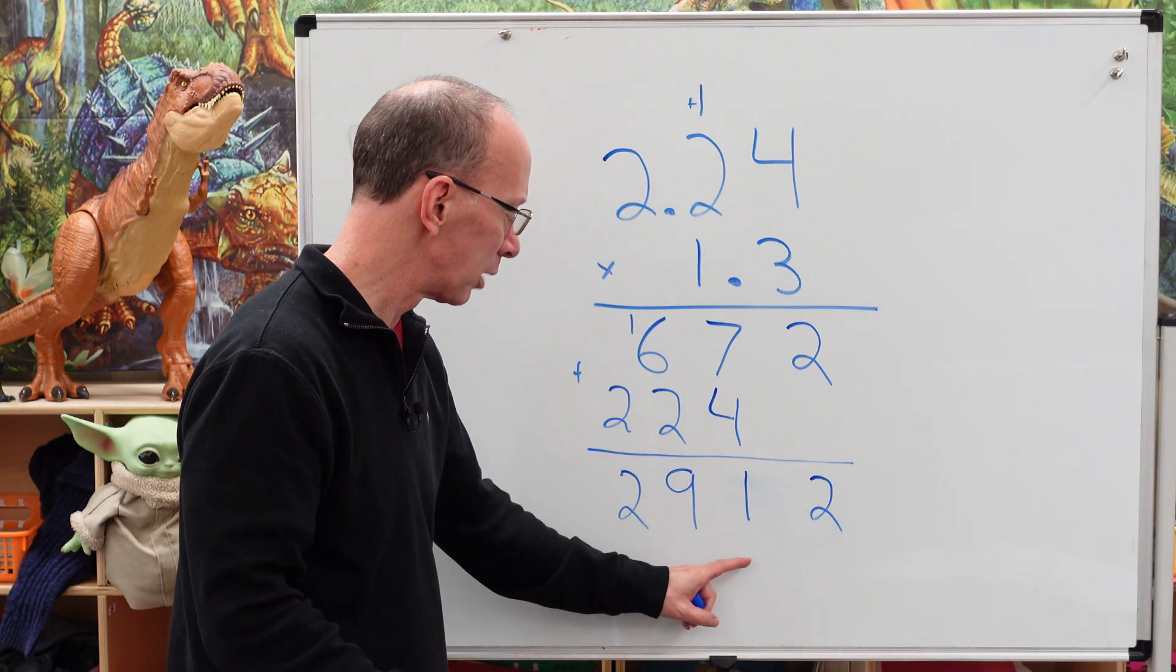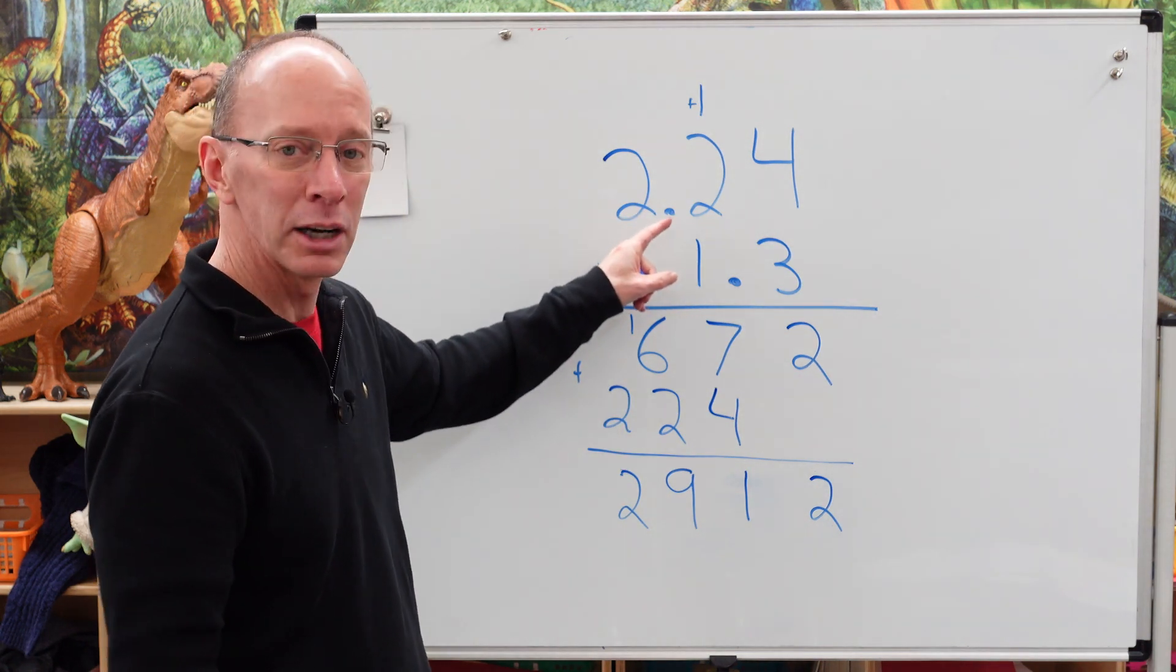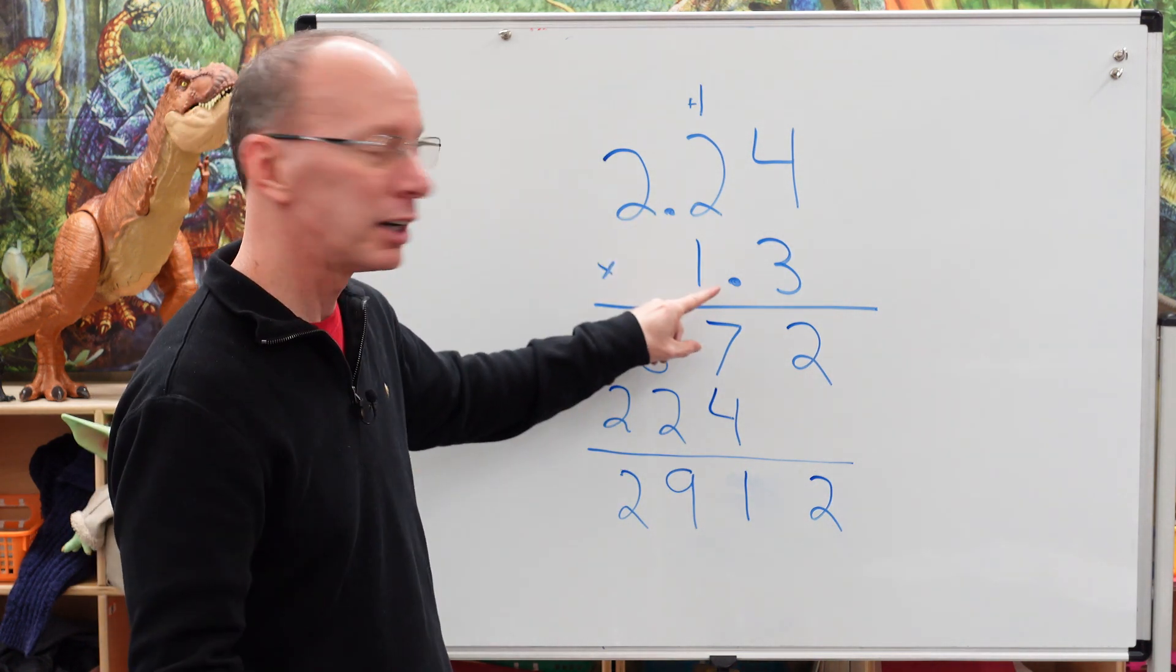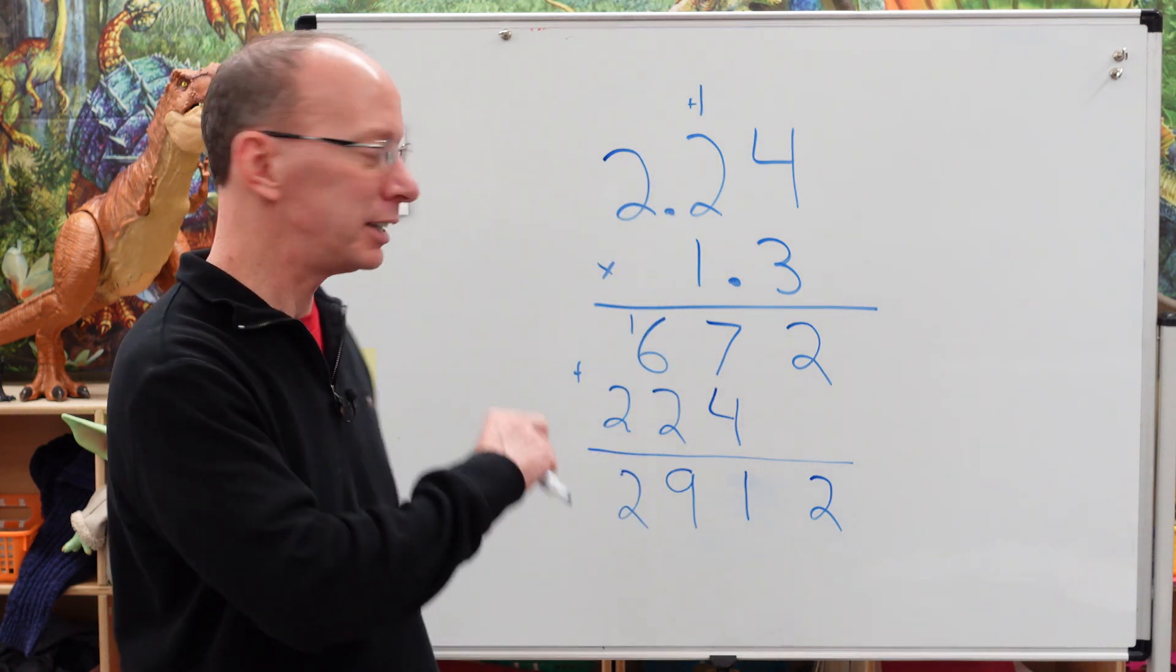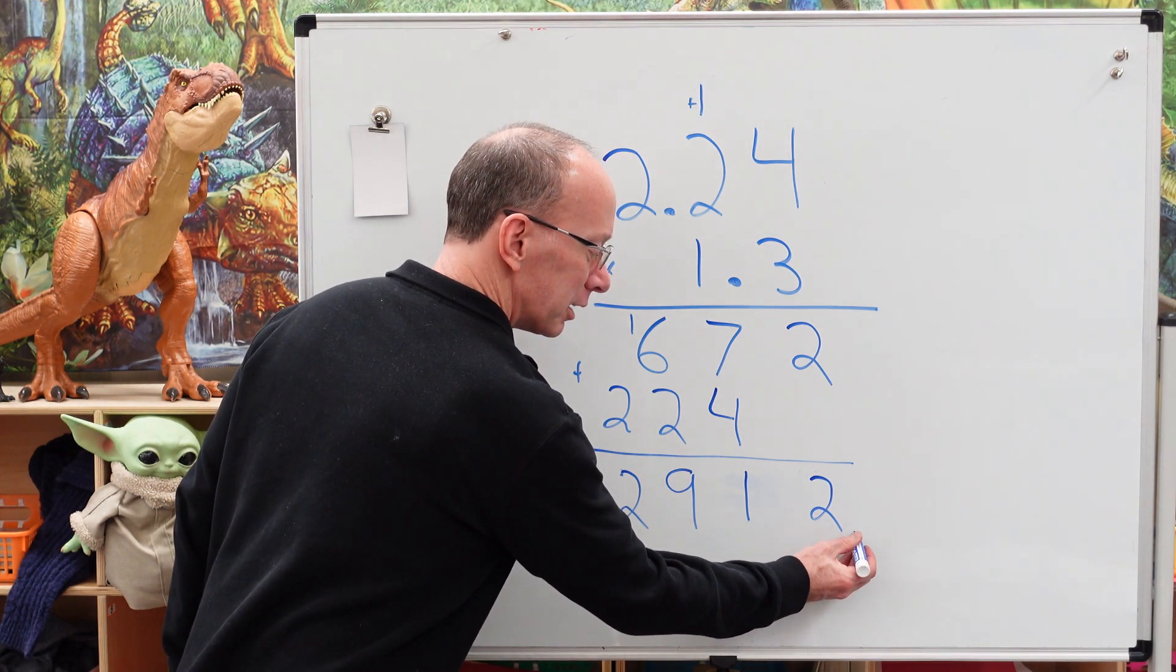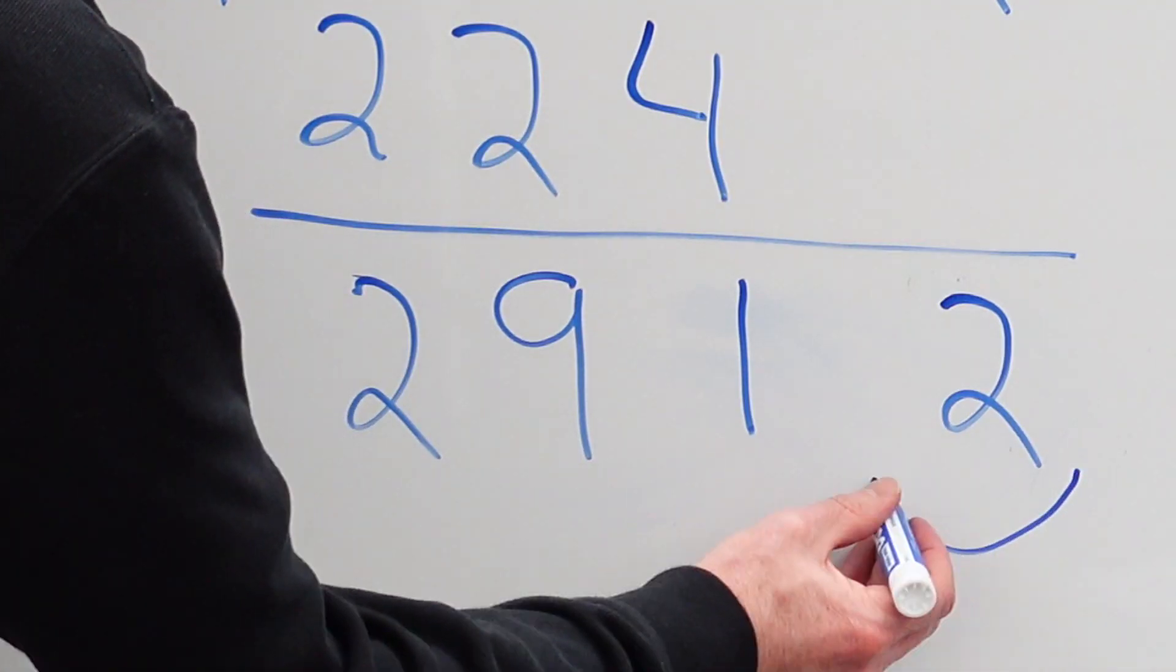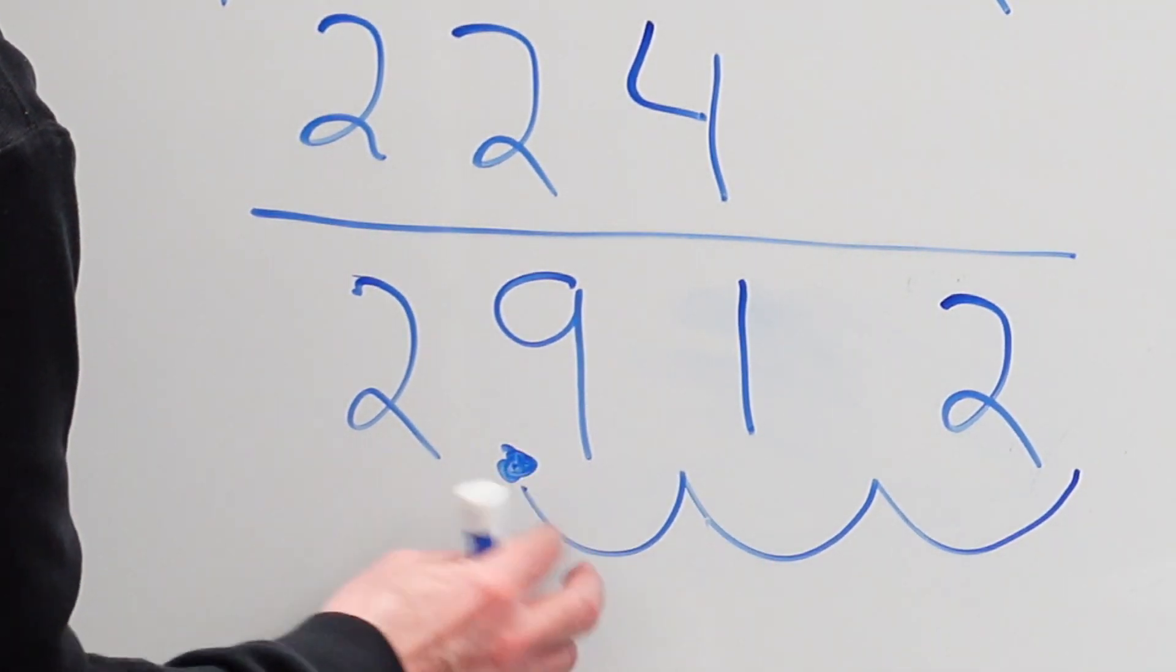Now we just need to figure out where we're going to put the decimal point in this number. So let's take a look here in our problem. How many numbers are behind this decimal point? 2. How many numbers are behind here? 1. 2 plus 1 equals 3. You guys are awesome. So we have our invisible decimal point here. So we're going to move it over 3 times. 1. 2. 3. We put the decimal point right there.